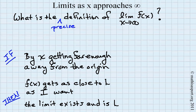In fact, the converse is also true. Namely, if the limit exists and it is L, then it guarantees that getting x far enough away from the origin means that f of x gets as close to L as I want. So we actually write this as if and only if, then is this true.